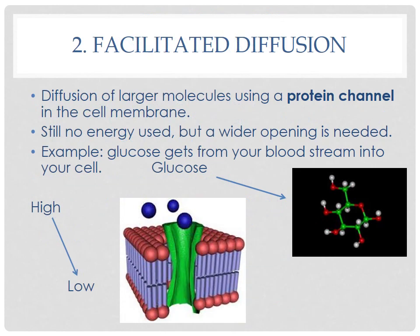The second type of passive transport is called facilitated diffusion. This is just like diffusion except it's for larger molecules — diffusion of larger molecules using a protein channel in the cell membrane. The green thing in the picture is the protein channel; the blue particles are larger molecules that can't move through the membrane without a gateway. An example of a large molecule is glucose, the food molecule used by plants and animals. It still goes from high to low concentration, so like riding downhill, it takes no energy — just a gateway.